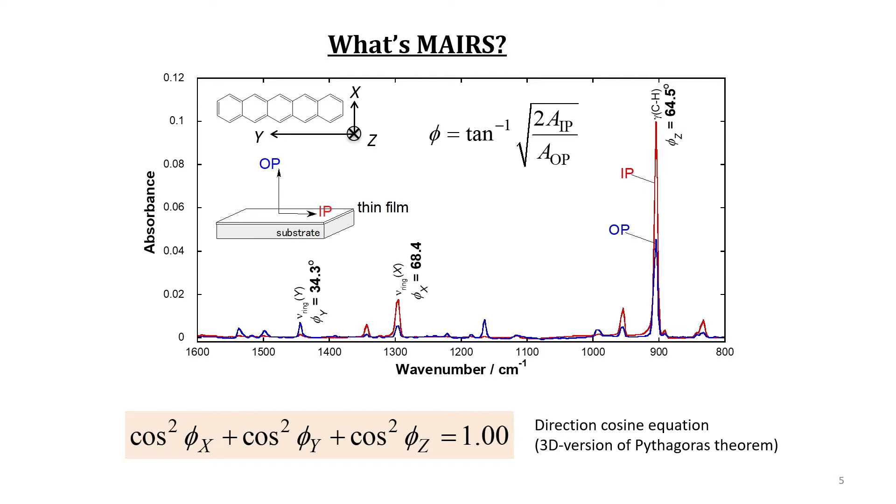Fortunately, vibrational modes along the three directions appear at different positions very apparently, and the orientation angles can be revealed by each intensity ratio because of the common ordinate scale of the IP and OP spectra. When the analytical results are put in the direction cosine equation, we have the summation of 1.00 as theoretically expected, which means that the analytical accuracy attains three significant figures. This is the typical benefit of using MAIRS for the thin film analysis.